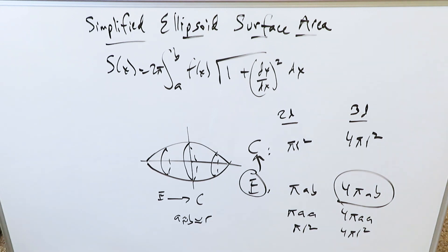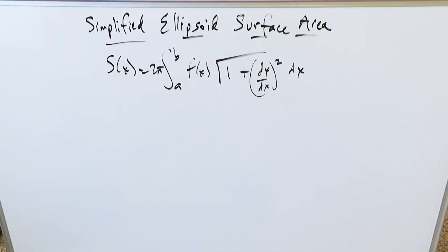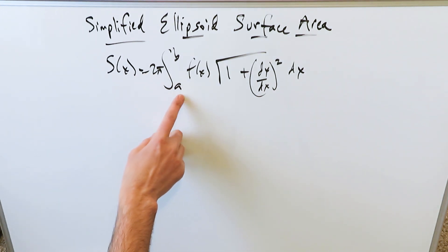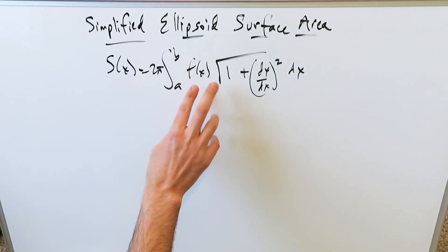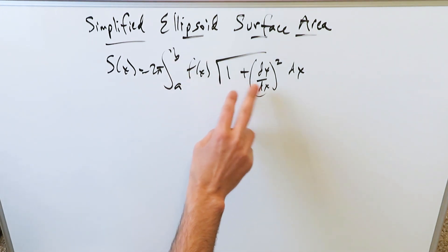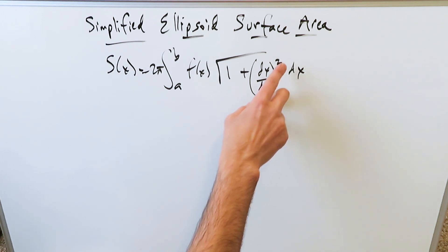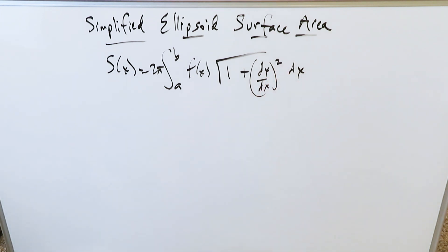Let's get to the derivation procedure for the surface area. Our surface area is going to be dependent on the surface area integral: 2π times the integral from the lower limit to the upper limit of the function times the square root of 1 plus the derivative of that function squared, dx. But we need to know what the function is.